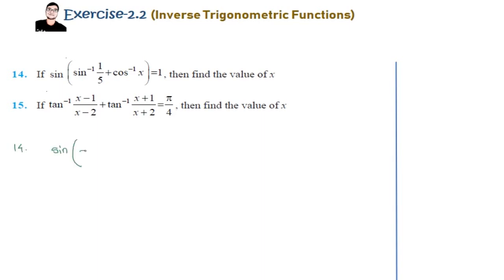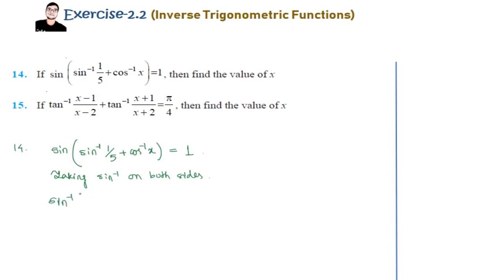We write: sin⁻¹[sin(sin⁻¹(1/5) + cos⁻¹x)] = 1. Taking sin⁻¹ on both sides, we have sin⁻¹ of sin of (sin⁻¹(1/5) + cos⁻¹x). There are a variety of methods to solve it, but this I find is the most simple method. Since we are dealing with principal values only, and since that is the most preferable form for inverse trigonometric functions — sine of anything lies from −1 to 1, so we can easily write sin⁻¹ of that.